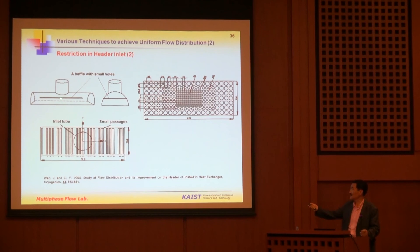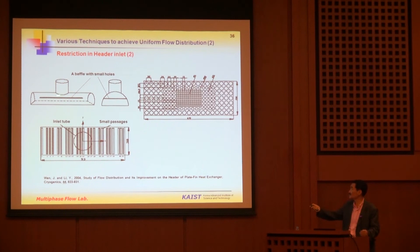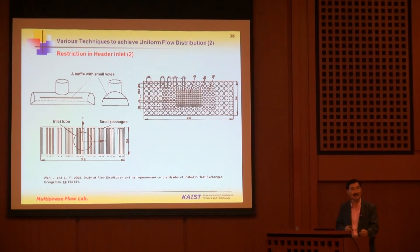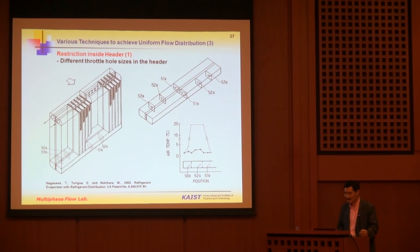Another technique is placing a baffle inside the header. Near the header inlet, the holes in the baffle are very small, giving higher friction and flow restriction. Further from the inlet, the holes are larger. The key information — how to choose the hole size and the spacing between holes — is patented in many heat exchangers.